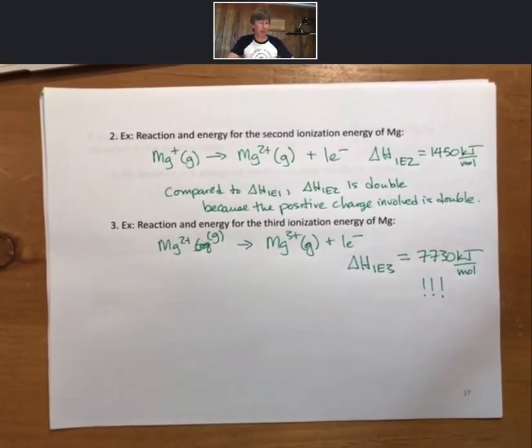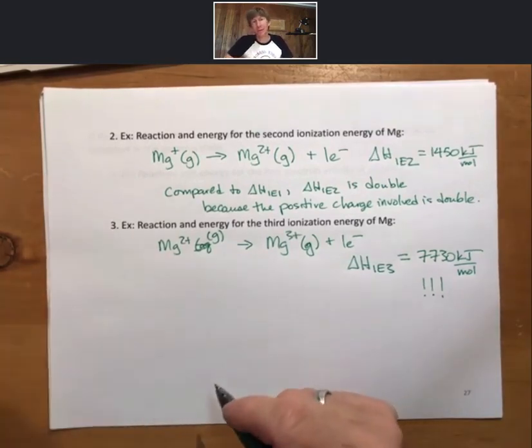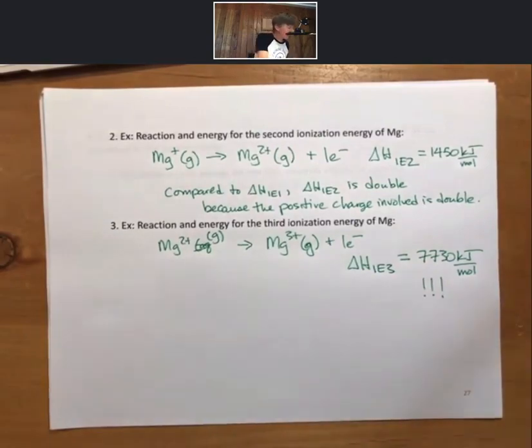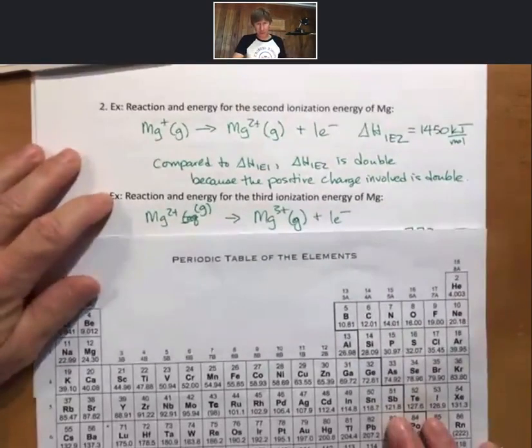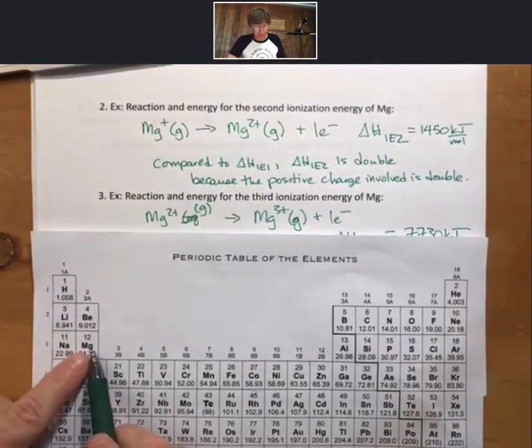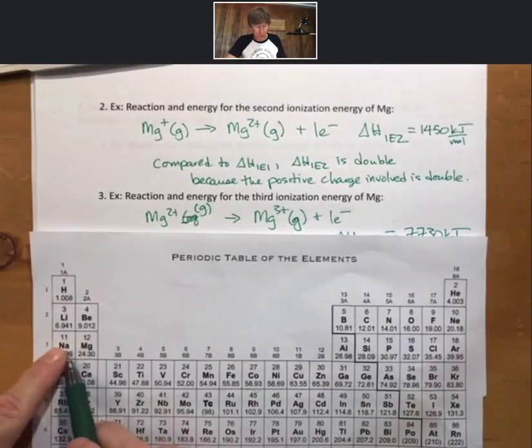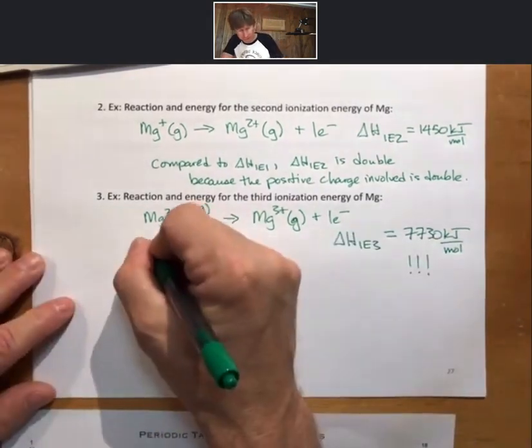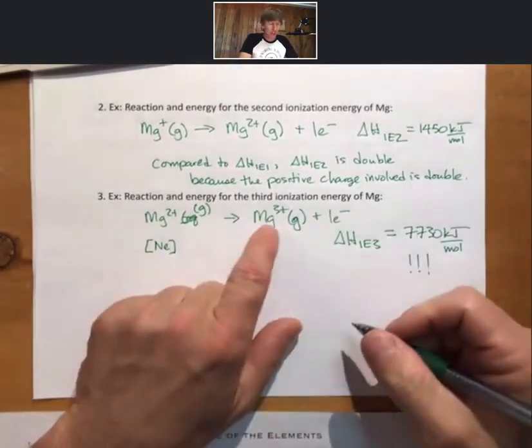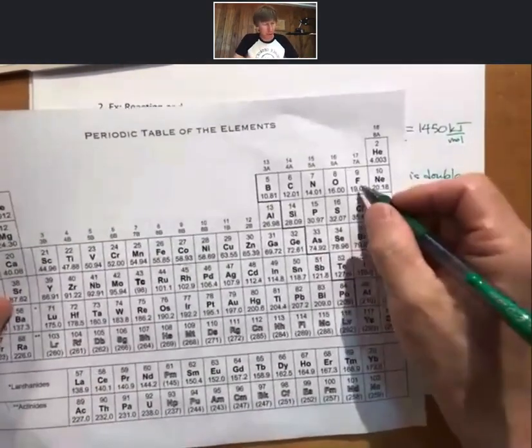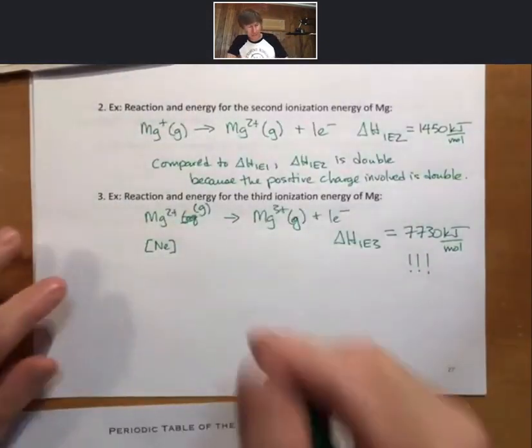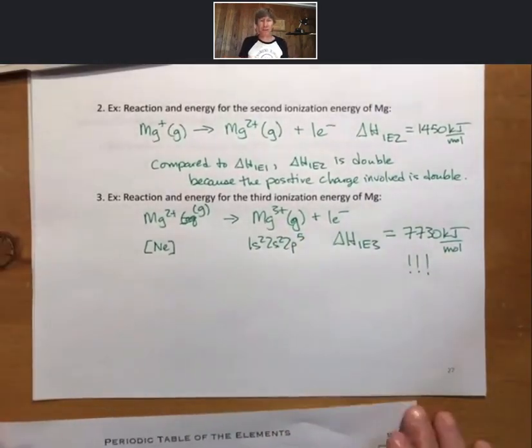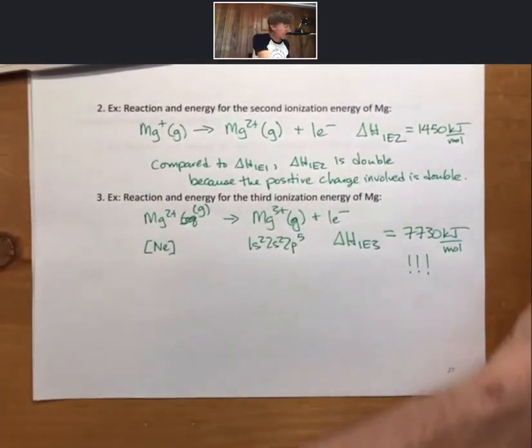Well, so much can be learned from going back to the electron configurations. If we look at the electron configuration of Mg2 plus, we would see that Mg2 plus, well, here's Mg, 12 electrons. Take away one, take away two, we're at a noble gas core of neon. Take away another electron, we're back to nine electrons. 1s2, 2s2, 2p5. This energy, so if we were to do this, and it was just charges, so just plus three and minus one.